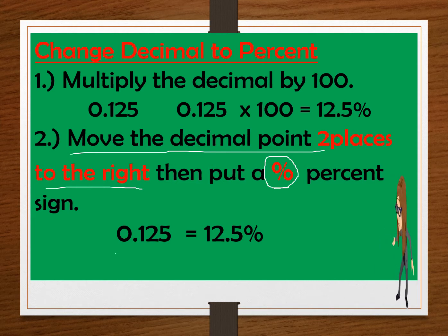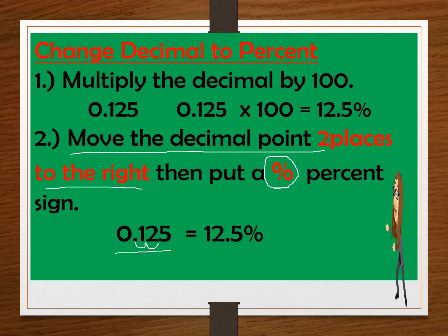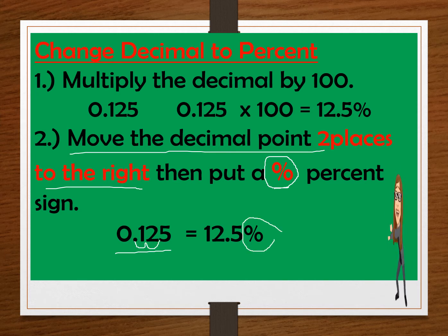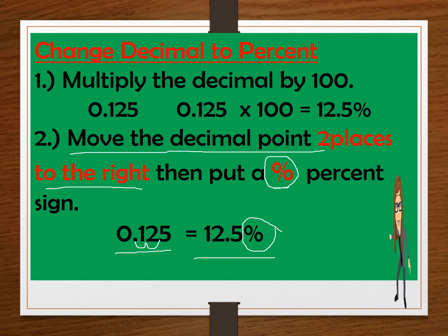Another example is 0.125. So you just move the decimal point one, two places to the right. And then don't forget to put the percent sign. So the answer is 12.5%.